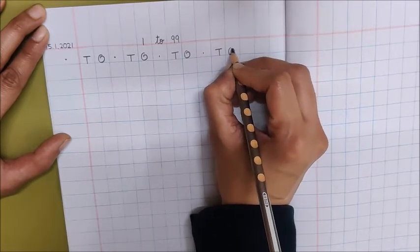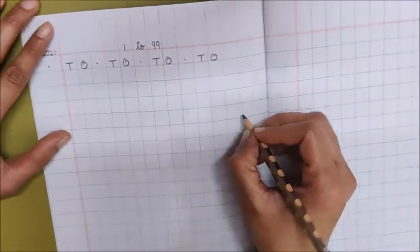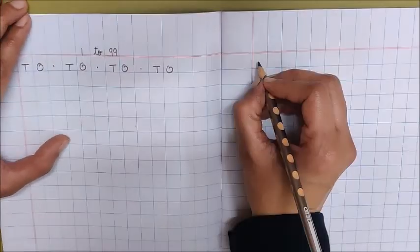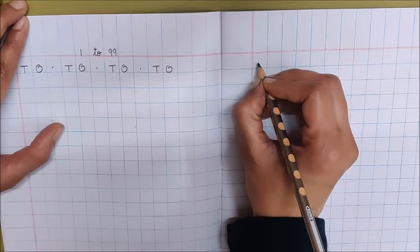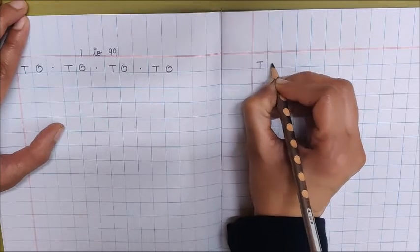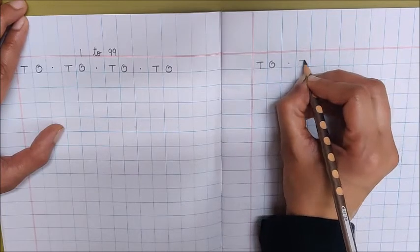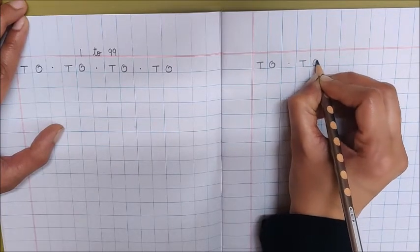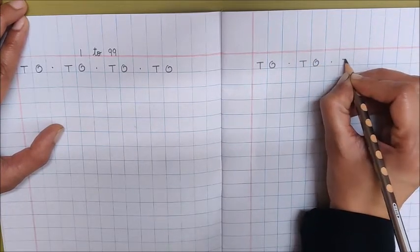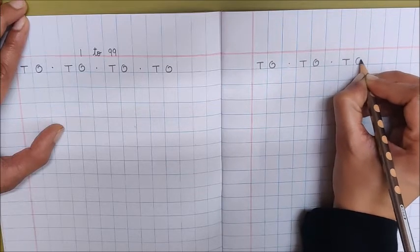Now go to the next page. And here also in the first box write down T, O, dot, T, O, dot, T, O.